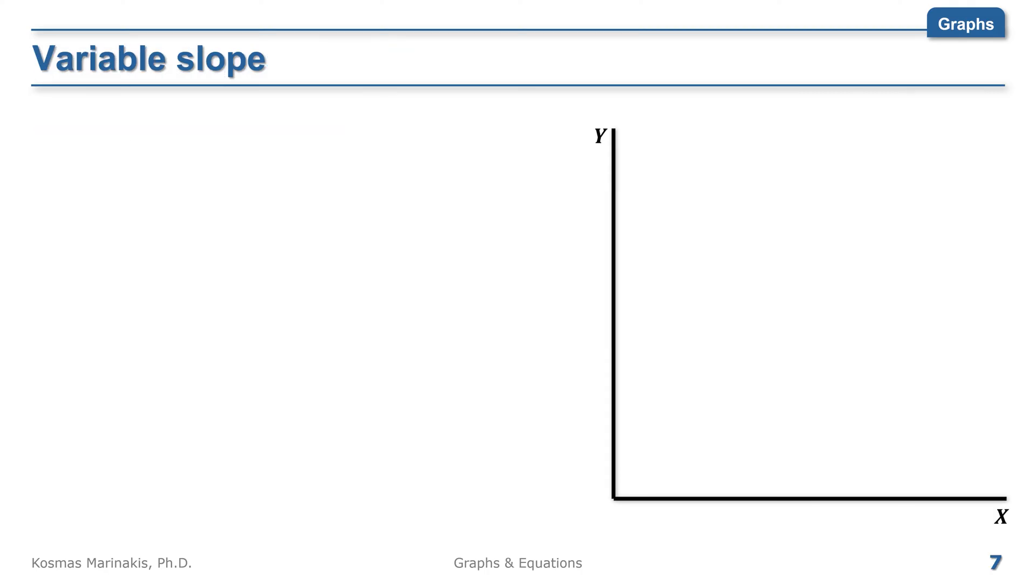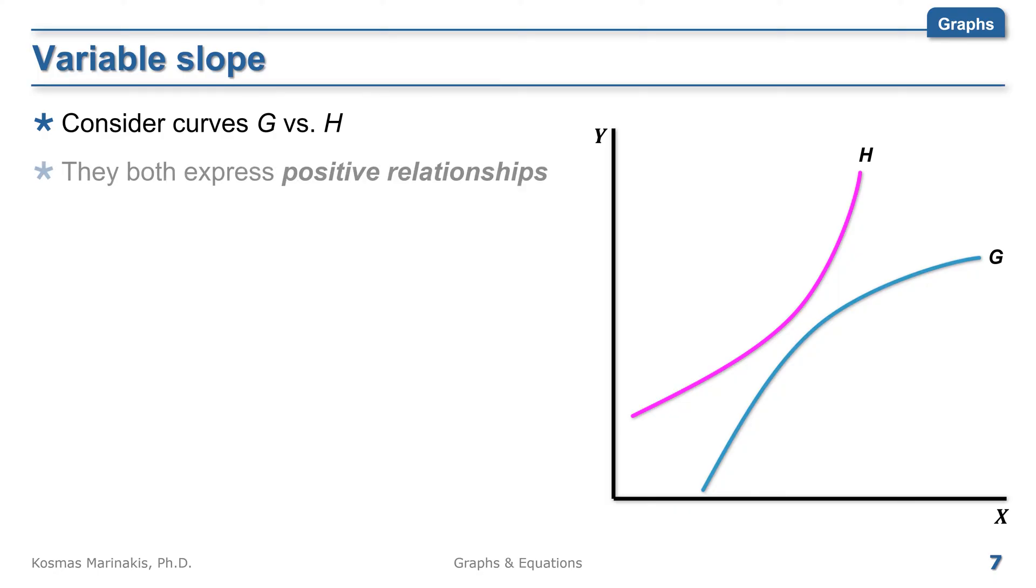Straight lines have constant slope. However, along curves, the slope may vary. Here are two such curves, G and H. They both go upwards, therefore they both have positive slopes, indicating that along both, an increase in x causes an increase in y.